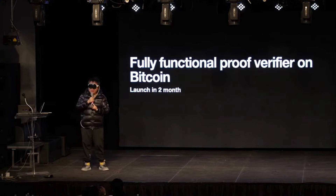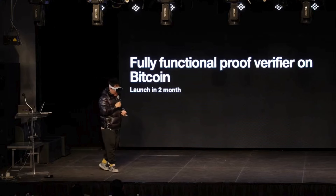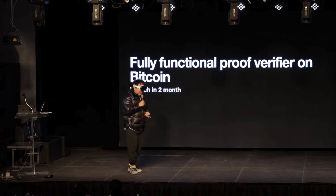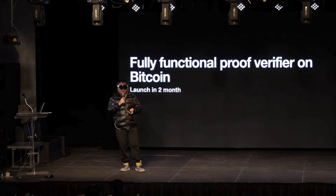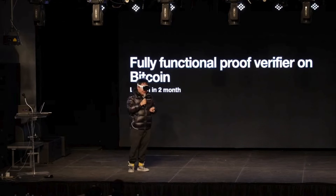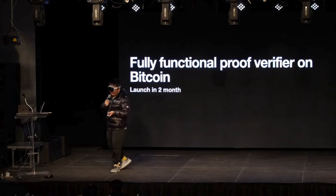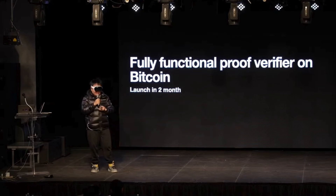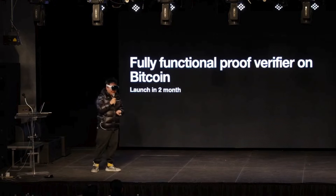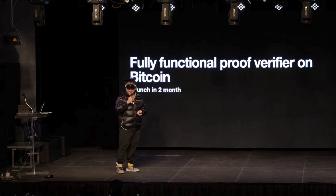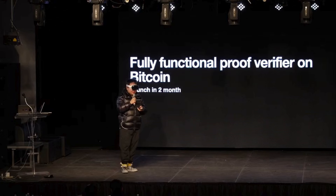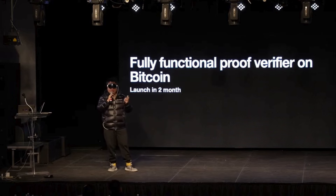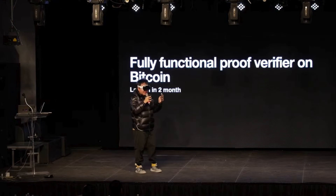So we are going to provide a fully functional proof verifier on Bitcoin, so that you can verify the Ethereum message on Bitcoin. This proof is based on a FRI proof instead of a Groth16 proof, because FRI proof is actually more friendly to Bitcoin script — it doesn't have pairing inside it. FRI proof has only about 60 field operations and 500 hash operations for each independent sampling. Inside the FRI proof you sample 32 different challenges, and these challenges are independent. So you can use a taproot to store all of these independent sampling challenges.